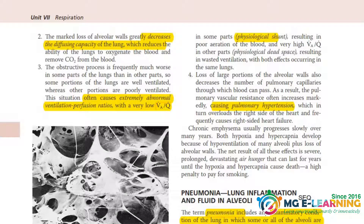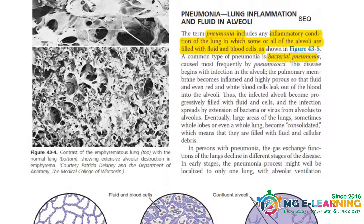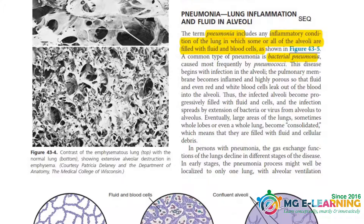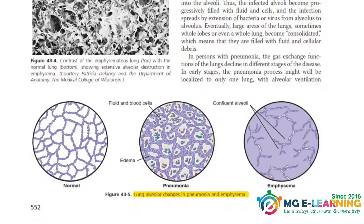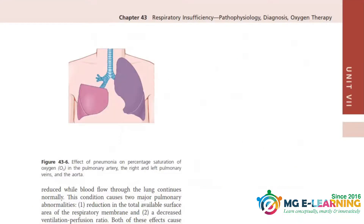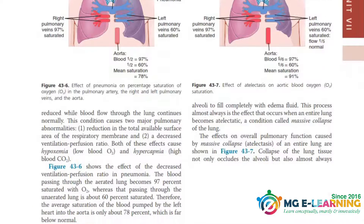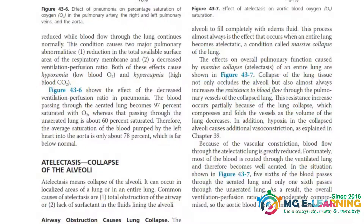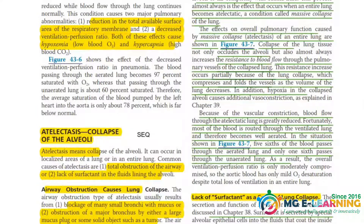The next topic is pneumonia. Pneumonia is also a potential SQ question. The definition of pneumonia is important, and the diagram showing the pathophysiology of the lung alveoli is also important. This continuation of pneumonia is an important topic.